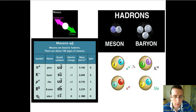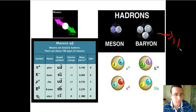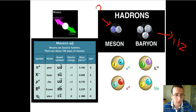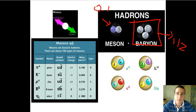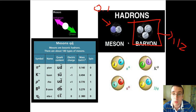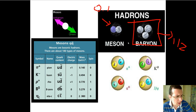Think of it this way: baryons are composite fermions — particles that have spins which are never integer spins. And mesons are composite bosons — particles that act boson-like in the sense that they have integer spins. So baryons are subject to the exclusion principle and can only have one in the same place at the same time. Mesons are not — they can be in multiple places at the same time and can have multiple of them all in the same place.